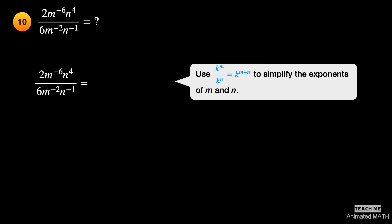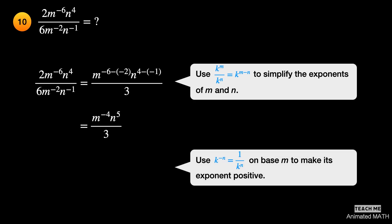Divide 2 by 6. Then use the 6th property to simplify the exponents of m and n. The exponent of m is negative 6 minus negative 2, or negative 4. The exponent of n is 4 minus negative 1, or 5. Use the 4th property on base m, since it has a negative exponent. The final answer is n to the 5th power over 3m to the 4th power.